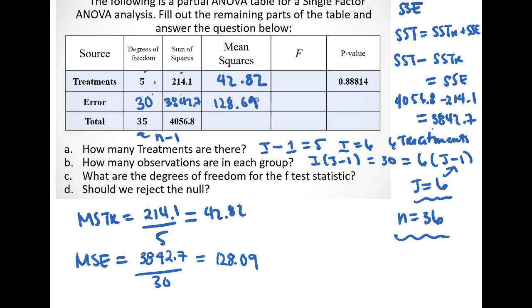The estimate for the average within variability, so the variability within the treatment groups. And the mean squared for the treatment is the average variability between the treatment groups. So as we can see, that's much smaller than this.